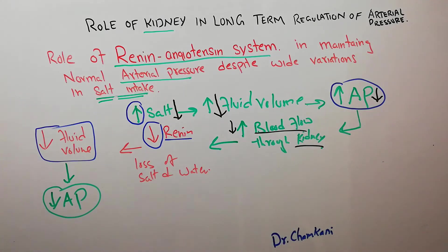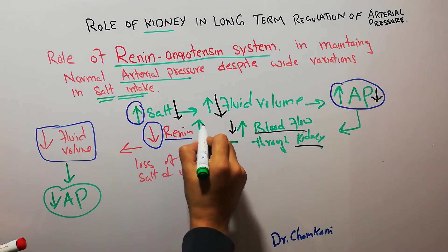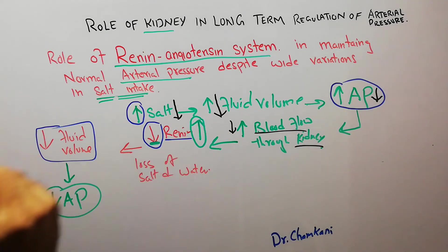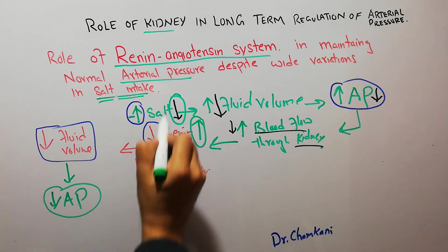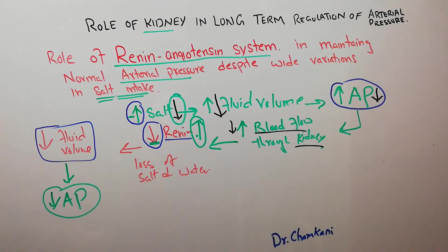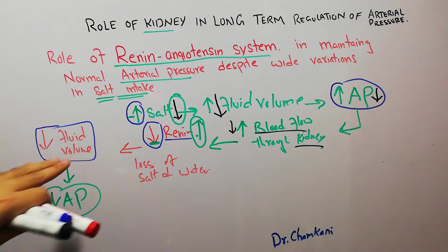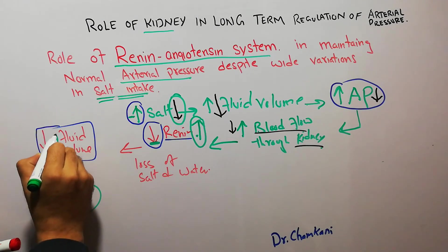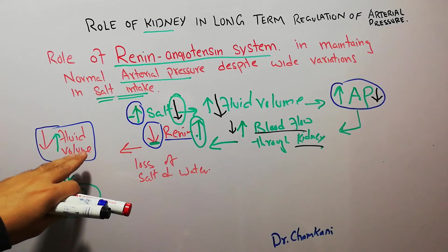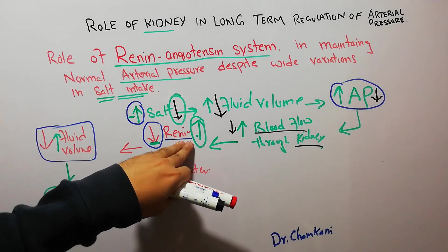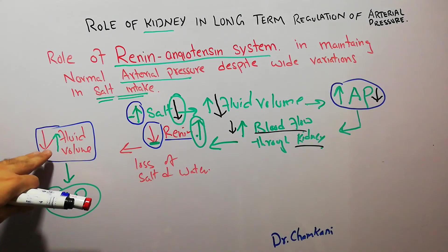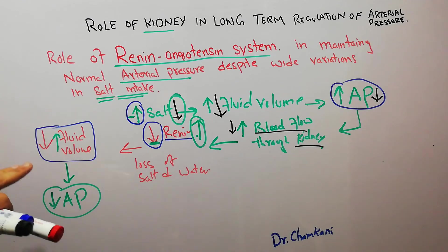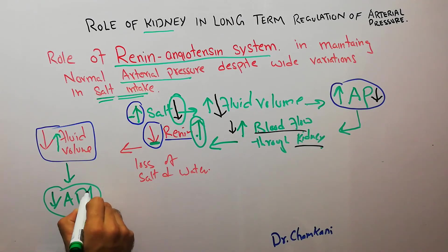When salt intake decreases, it ultimately leads to decreased blood flow through the kidneys, which causes an increase in the formation of renin. Renin formation decreased when salt intake increased, but when salt intake decreases, the formation of renin increases. This increased renin formation will lead to increased retention of salt and water, and it will ultimately increase the extracellular fluid volume.